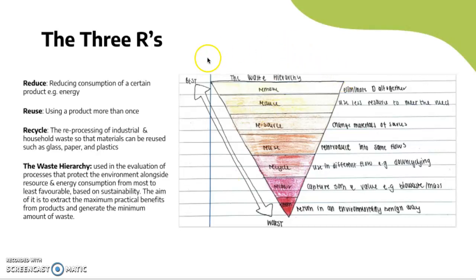First we have removing, which is the best option for waste, but that's very difficult especially for plastics, which are very difficult to degrade and can last in the environment and oceans for a really long time. The next is reduce — consuming less of certain products, buying less plastic or electronics if they're not necessary. Then there's resource — changing to more sustainable, recyclable, or biodegradable materials.